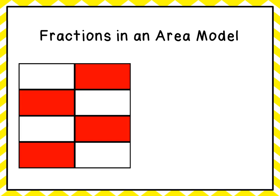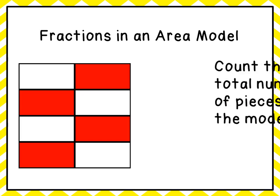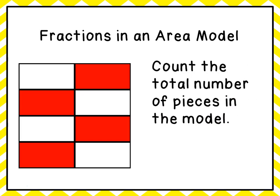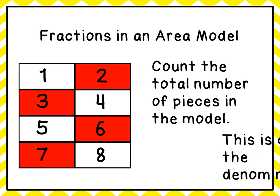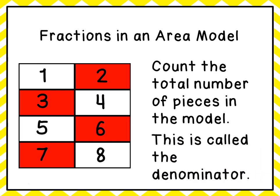All right, let's take a look at another one. Again, the first thing we're going to do is count the total number of pieces in the model: one, two, three, four, five, six, seven, eight. And that's called the denominator — it's the number that goes on the bottom.